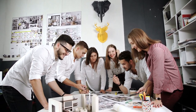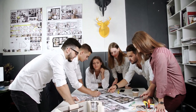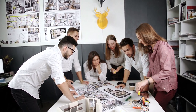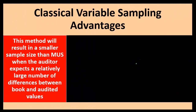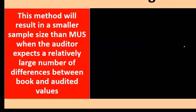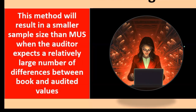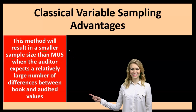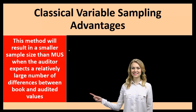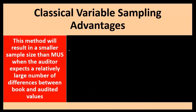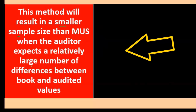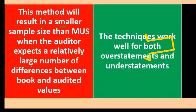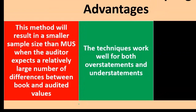Looking at the advantages of classical variable sampling compared to monetary unit sampling: this method will result in a smaller sample size than monetary unit sampling when the auditor expects a relatively large number of differences between book and audited values. A smaller sample size means less work and less actual testing for the auditor.